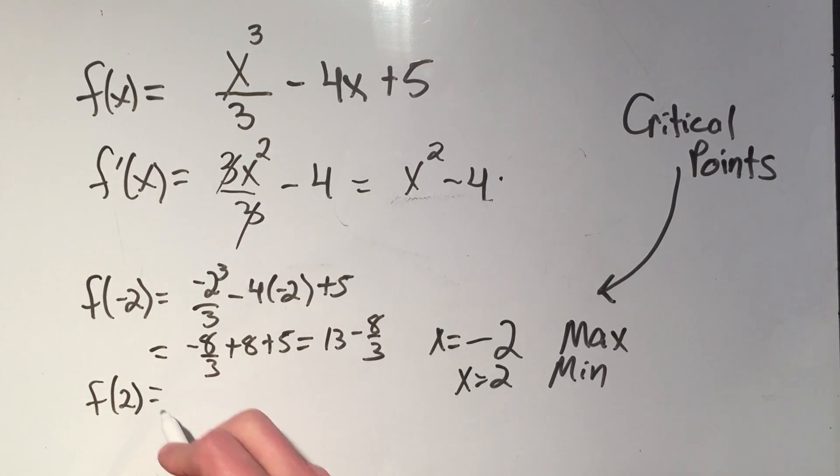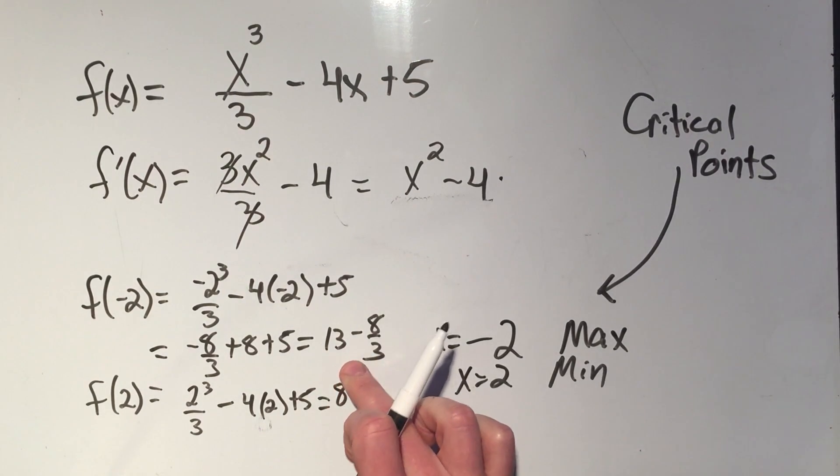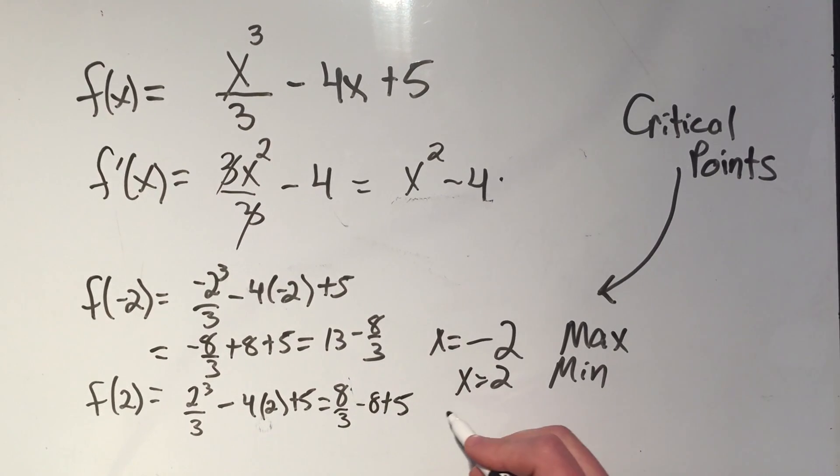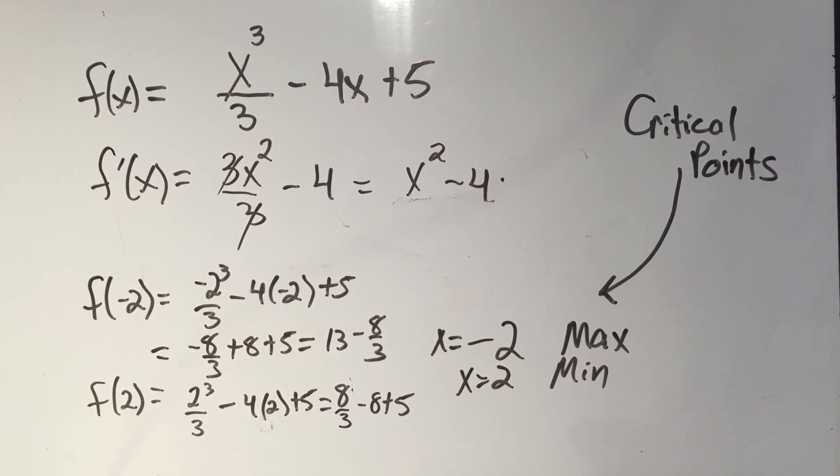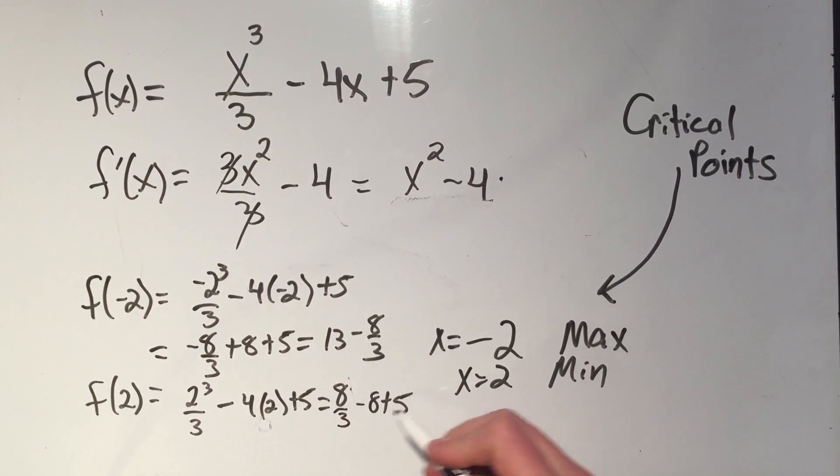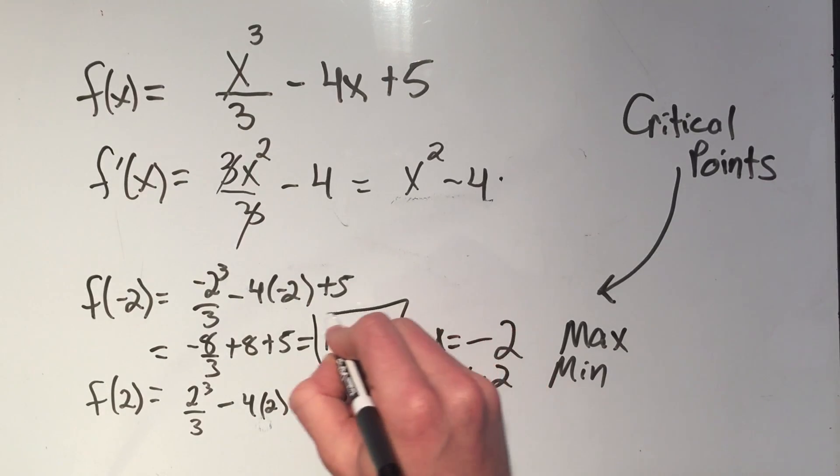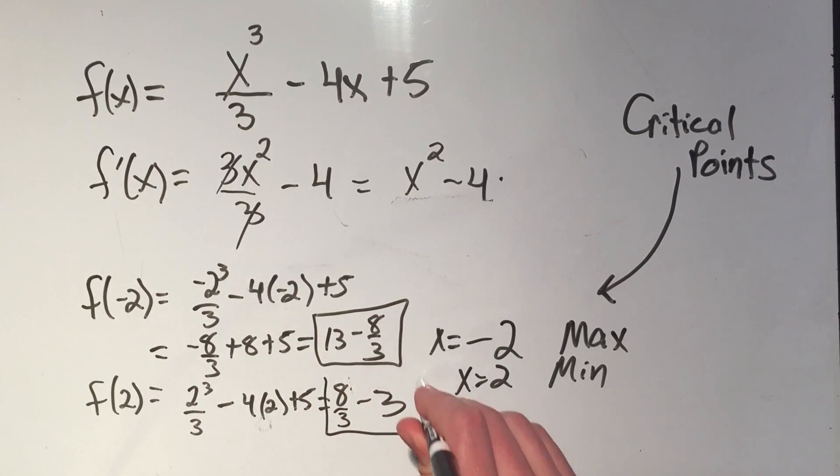And now if I plug in positive two, this is going to be my minimum, that'll be positive two cubed over three minus four times positive two plus five. That's going to be eight cubed, or not eight cubed, two cubed is eight over three minus eight plus five. Let's see, that's going to be minus eight plus five is minus three. So I'm going to get eight thirds minus three. So this thing would be my maximum value. And this thing would be my minimum value of this function.